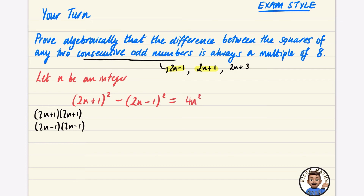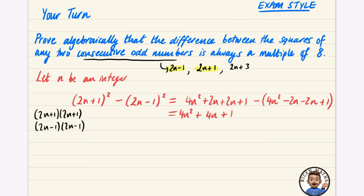Expanding (2n plus 1) squared gives 4n squared plus 4n plus 1. Expanding (2n minus 1) squared gives 4n squared minus 4n minus 4n plus 1, which is 4n squared minus 4n plus 1. You must be careful to subtract the entire second expansion in brackets. Subtracting: the 4n squared terms cancel, the plus 1 and minus 1 cancel, and we are left with 8n.